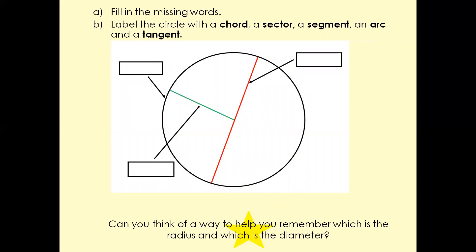Now it's your turn. Pause the video and fill in the missing words, then label the circle with a chord, a sector, a segment, an arc, and a tangent. Pause the video and give it a go.